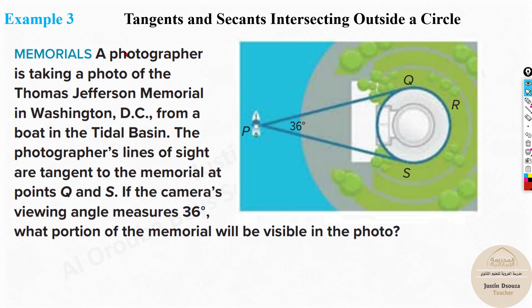Now, we have a real world problem. A photographer is taking a photo of Thomas Jefferson Memorial in Washington, D.C. From a boat in Tidal Basin, the photographer's line of sight are tangents to the memorial at the points Q and S. So let's understand this. The photographer over here is taking the photo of this particular monument. From here, he is going to take the photo. But the line of sight to this point and this point are tangents. So then we can apply the tangent theorems, isn't it?